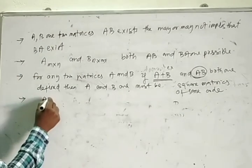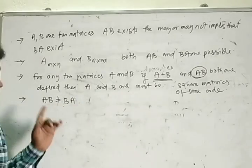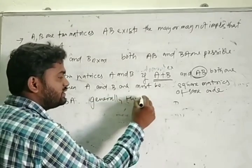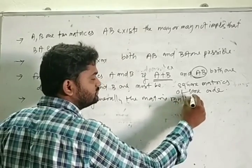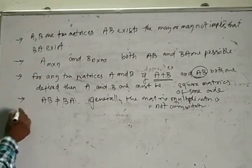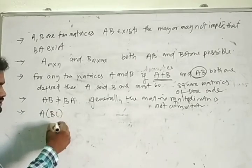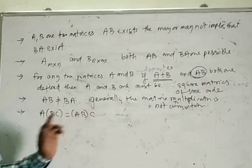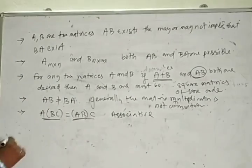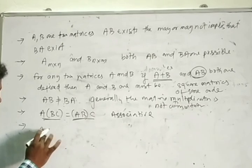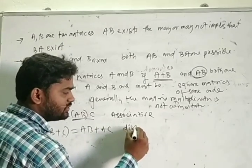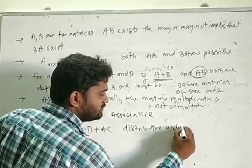Third property: AB is not generally equal to BA. That means matrix multiplication is not commutative in general. Fourth property: A(BC) equals (AB)C — matrix multiplication is associative, provided both sides of the multiplication are defined. Fifth property: A(B+C) equals AB + AC — matrix multiplication is distributive over addition, provided the products are defined.